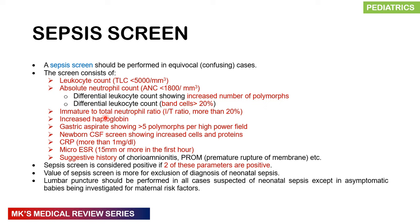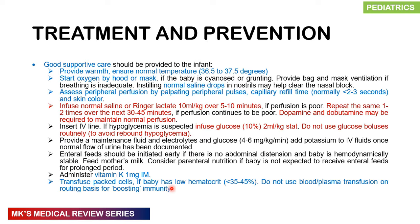Other sepsis screen components include raised haptoglobin, a gastric aspirate showing >5 polymorphs per high-power field, CSF with increased cells and protein, CRP >1 mg/dL, and micro-ESR >15 mm in the first hour. Suggestive history includes chorioamnionitis or premature rupture of membranes. The sepsis screen is considered positive if two or more parameters are positive. Its main value is for exclusion of neonatal sepsis. Lumbar puncture should be performed in all cases of suspected neonatal sepsis, except asymptomatic individuals investigated for maternal risk factors only.